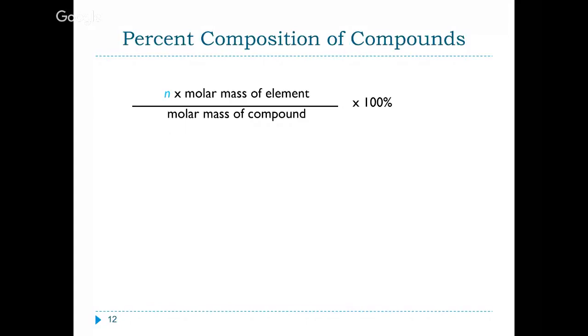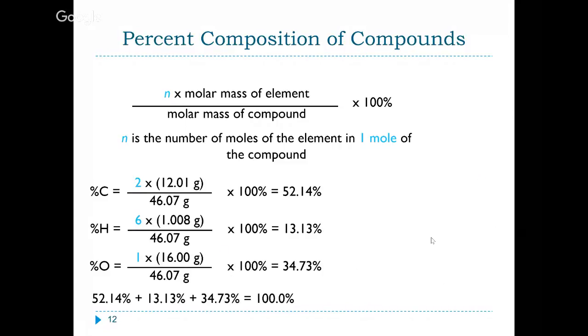So the math always goes: whatever my subscript is, n, times the mass that we find in the periodic table, and then we divide that by the entire mass of the compound, what we looked at in the last slide, calculating the formula weight or the molecular weight. For this particular compound, this is ethanol. We have two carbon atoms, six hydrogens, and one oxygen. To find the percent composition of each of these individual elements, the first thing you want to do is add up the molecular weight. So two times the mass of carbon, which is 2 times 12.01, plus 6 times the mass of hydrogen, 6 times 1.01, plus the mass of oxygen, 16.00. So that is where this 46.07 grams comes from.